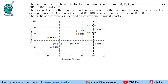It says the two plots below show data for four companies codenamed A, B, C and D over three years 2019, 20 and 21. The first plot shows the revenue and costs incurred by the companies during these years. For example, in 2021, company C earned 100 crores in revenue and spent 30 crores. So on the x-axis we see the revenue and on the y-axis we see the cost.